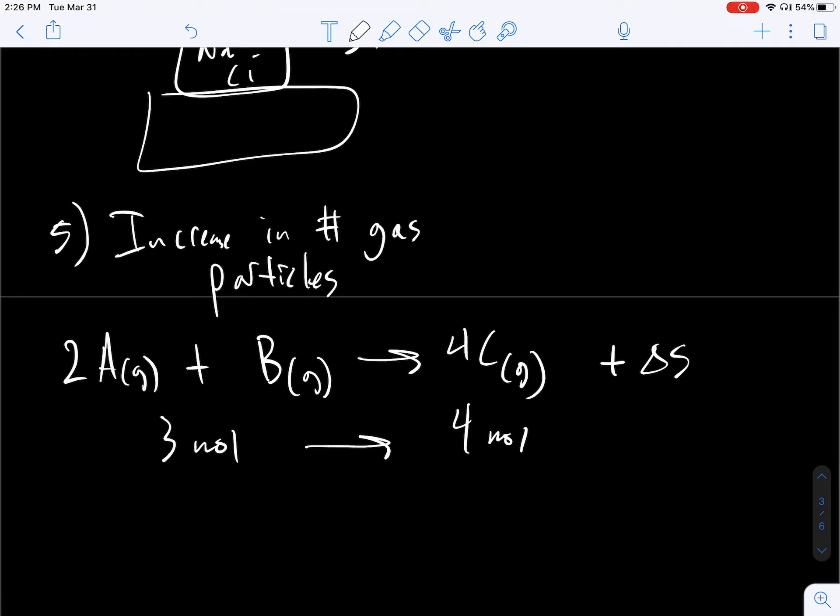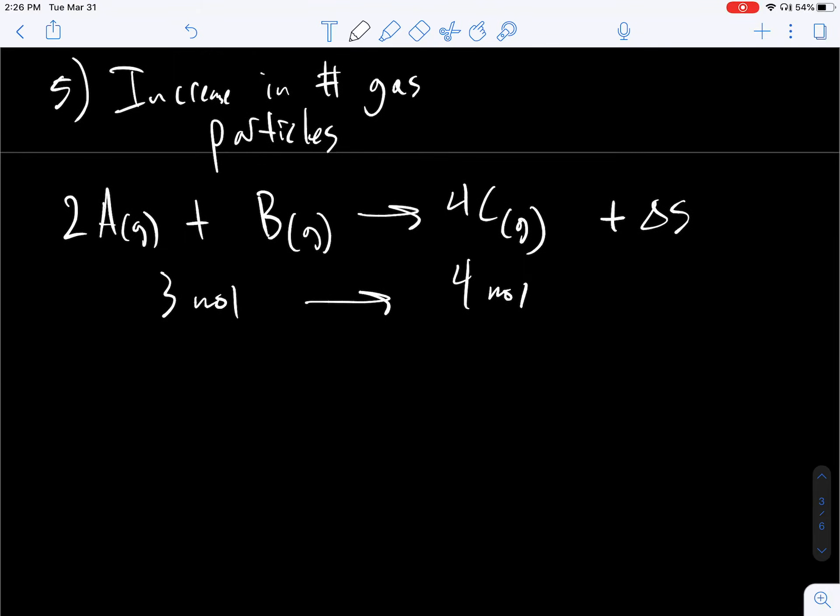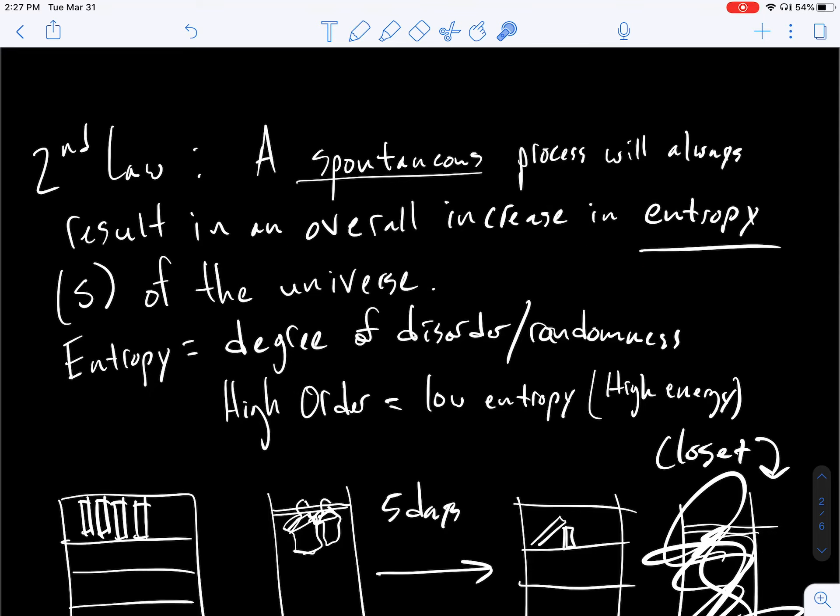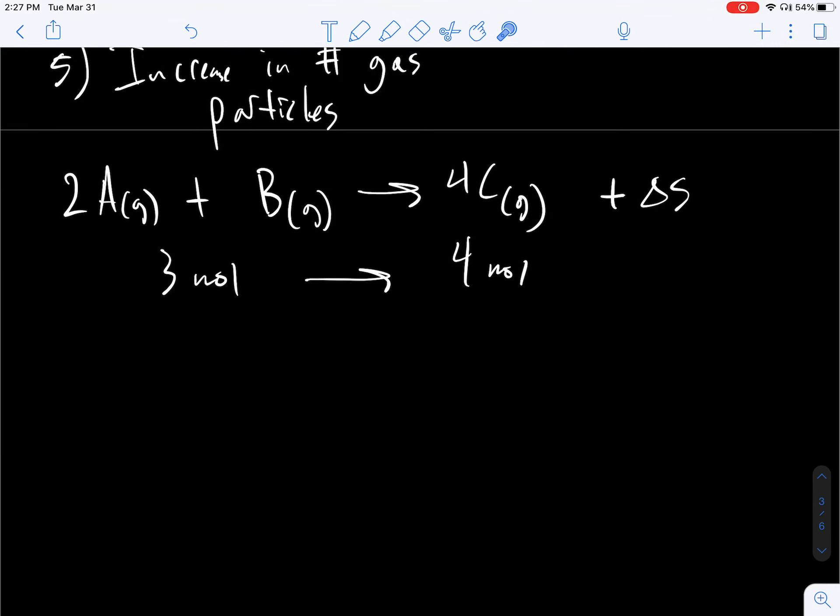Let's think about some examples of some real compounds now, thinking about delta S for the system. Notice I haven't been talking about spontaneous reactions yet. I'm really just focusing on getting us better at predicting entropy values. It's going to be important in the future. We haven't talked about spontaneous reactions really at all yet. We just know from up here, a spontaneous process will always result in overall increase in entropy, but in the universe. We're talking about entropy of the system right now.